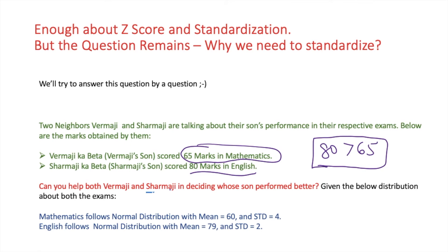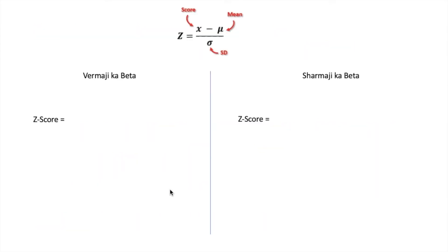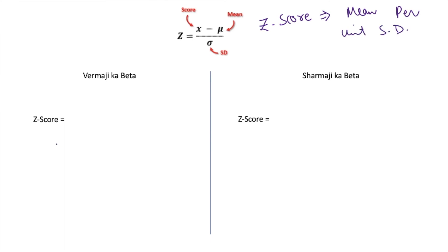In other words, we have to express the deviation from the mean per unit standard deviation. The deviation from the mean per unit standard deviation is nothing but our Z-score. So Z-score equals deviation from the mean per unit standard deviation — keep this in mind.